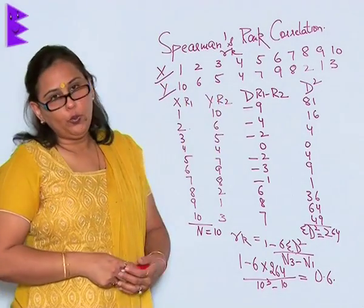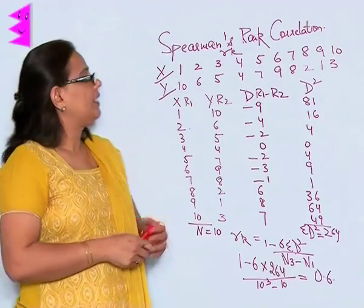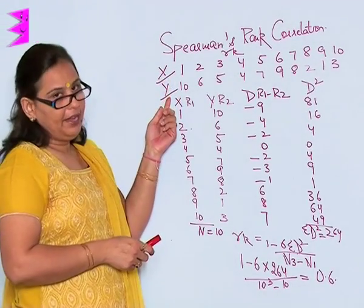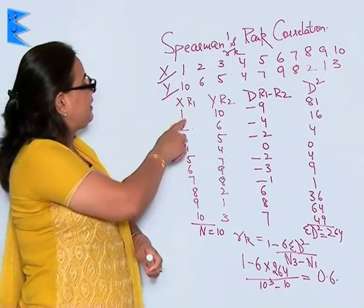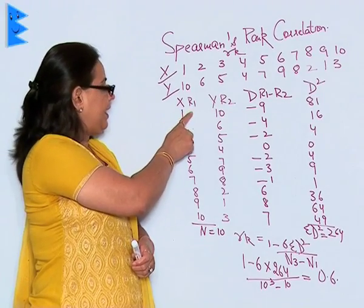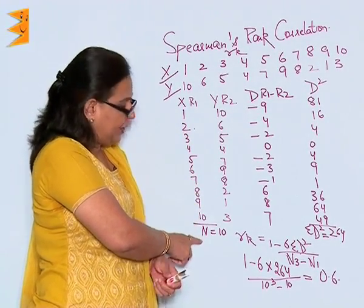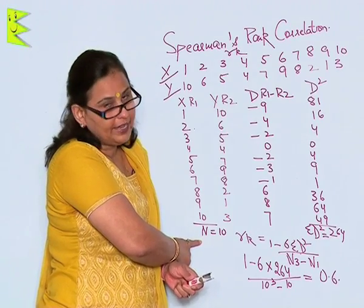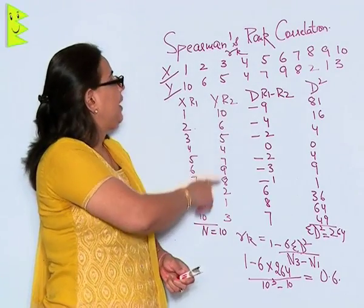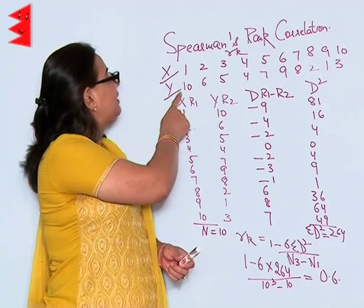Now I will be talking about two different sets of variables, X and Y, which I have written as Rank 1. In the X: 1, 2, 3, 4, 5, 6, 7, 8, 9, and 10, which means the number of observations that I have is 10, and the Rank 2 as Y.